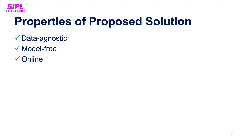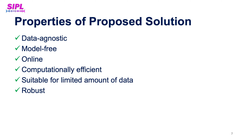Our solution is also online, which means it processes the input in a serial manner. Additionally, it is computationally efficient, can work with a limited amount of data as in this competition, and is robust — having only a few hyperparameters and not being very sensitive to their values. These last three properties are very attractive compared to solutions based on deep neural networks, for example, that have recently become popular.